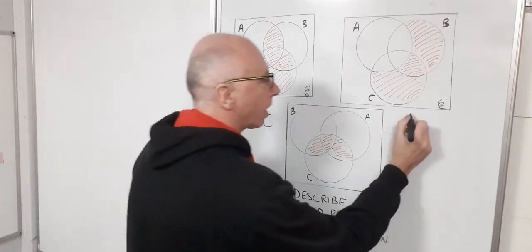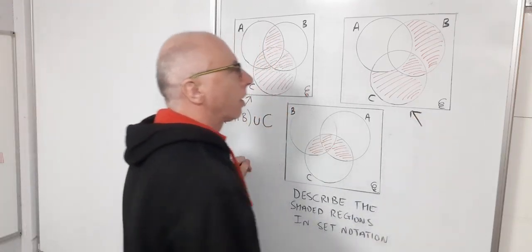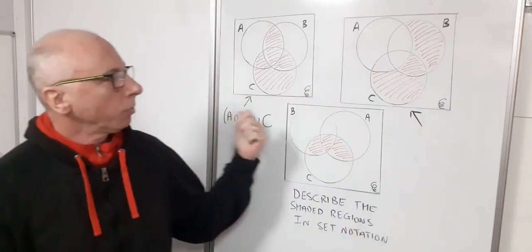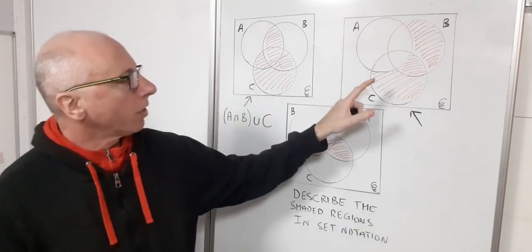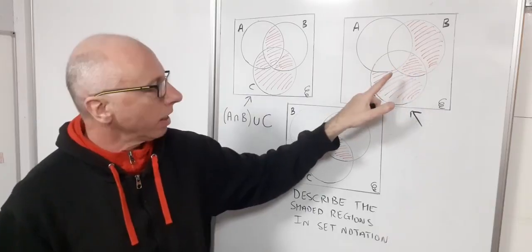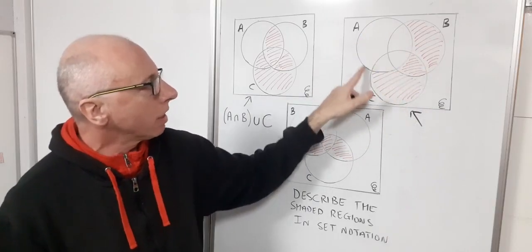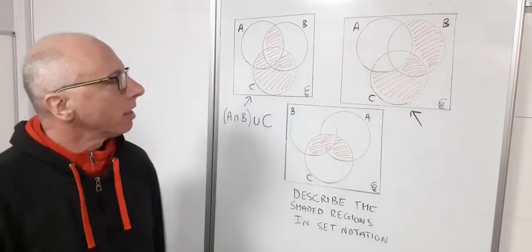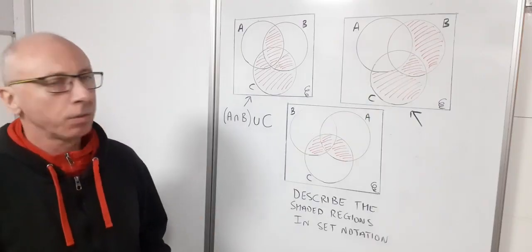Let's move on to this one. Okay, so what's going on here? I've got my B and my C here, so I've got the bit that intersects and most of it, but I've got missing all of A. How am I going to write that in set notation?